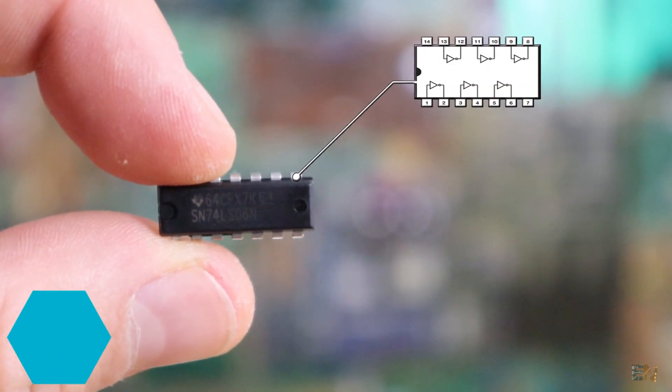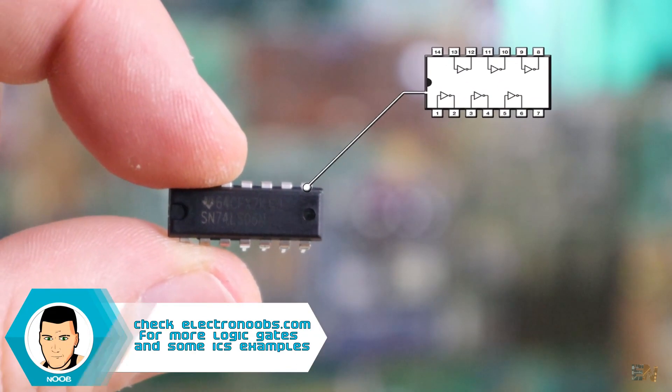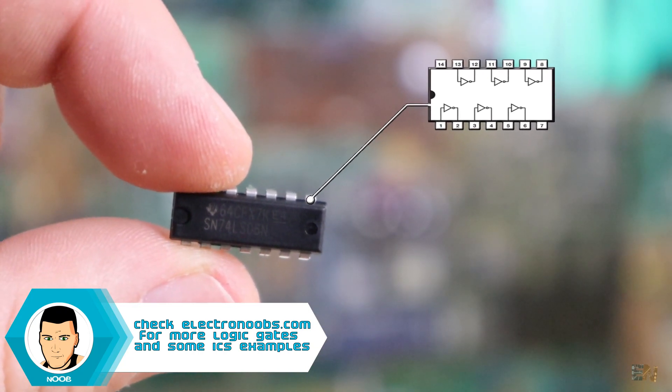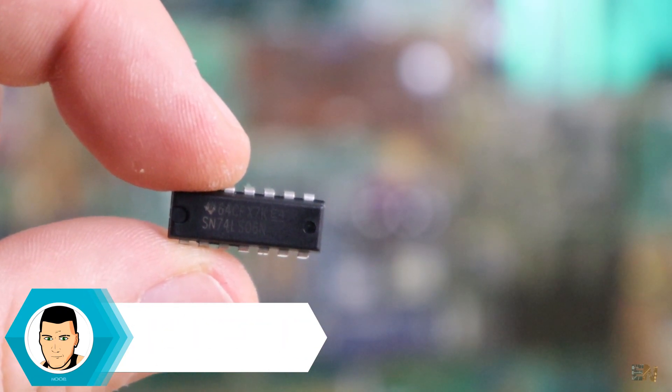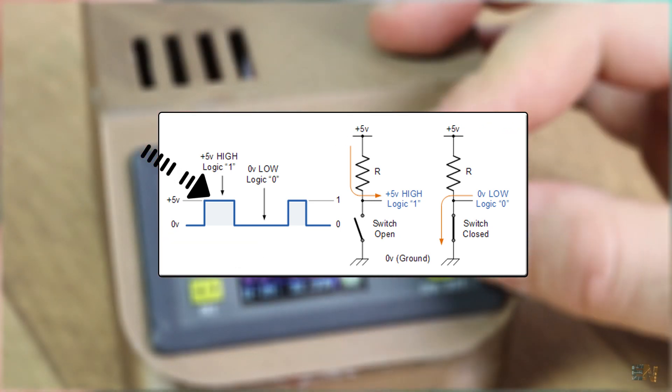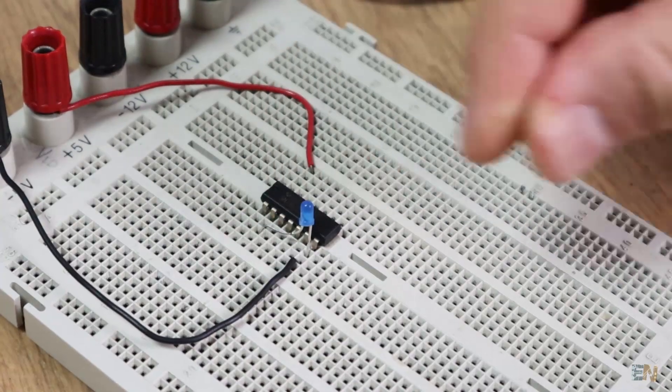Here I have the SN74LS6N NOT gate integrated chip. It has 6 inverting gates. Now in digital, logic signals are ones and zeros, where zero is the lowest value and one is the highest. We will work with ground and 5V.